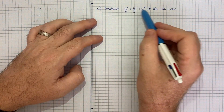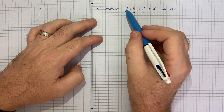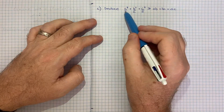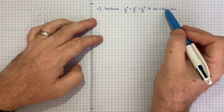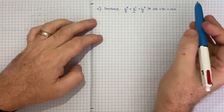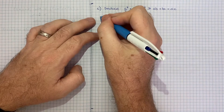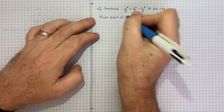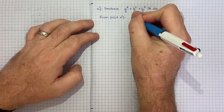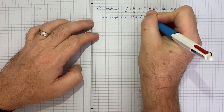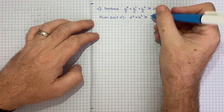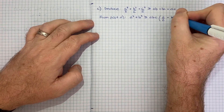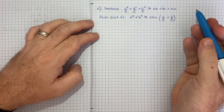You can start to notice some of the patterns — we're dealing with all three letters on both sides. On the left hand side we've got A cubed, B cubed, C cubed each divided by a different letter, and on the right hand side we've got each combination of two letters. We're going to use our result from part A: A cubed plus B cubed is greater than or equal to ABC times A on C plus B on C.